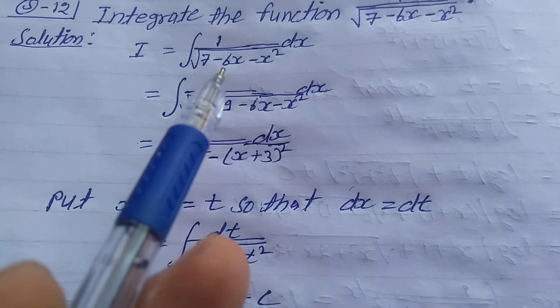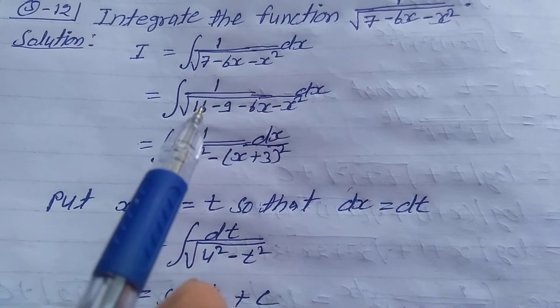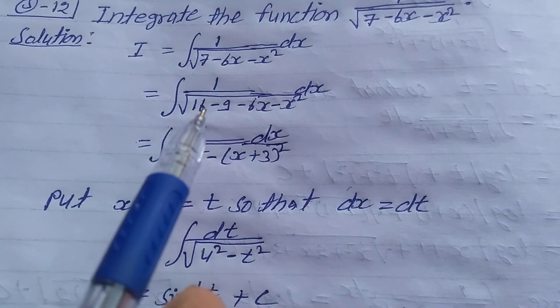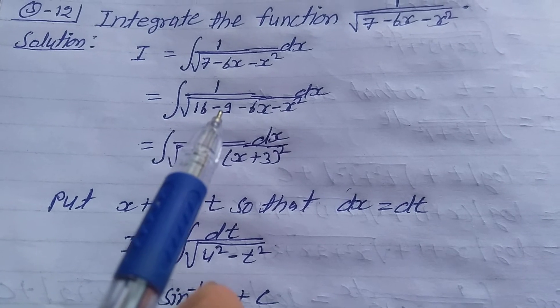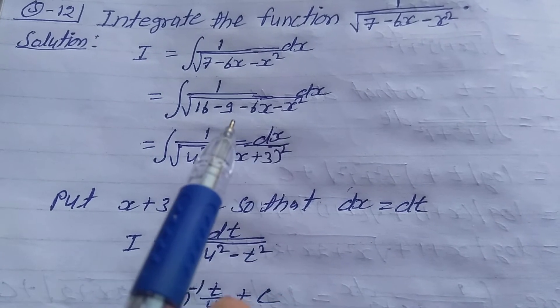Add and subtract 9, so this is equal to integration of 1 upon root of 7 plus 9 is 16, minus 9 minus 6x minus x square dx.